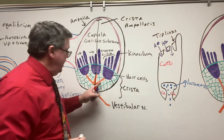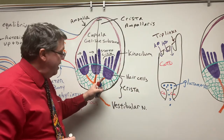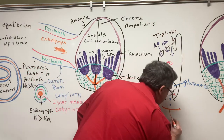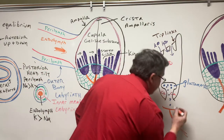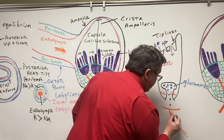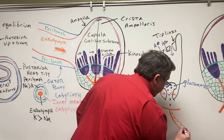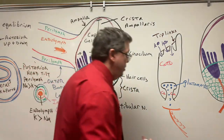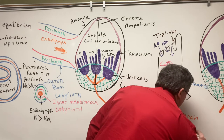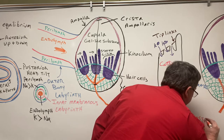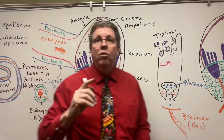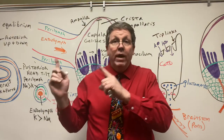Down below we have a nerve — the vestibular nerve. When the neurotransmitter glutamate hits that nerve, it starts sending signals to the brain. Specifically, it goes to the brain stem, to the pons. So that's what happens on the right side when I turn my head to the right — depolarization occurs and signals increase.